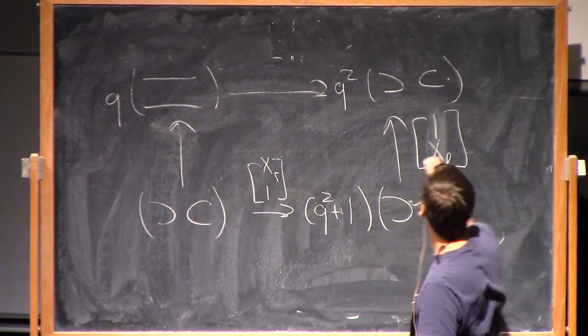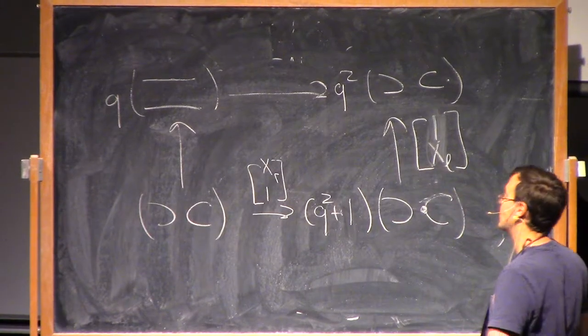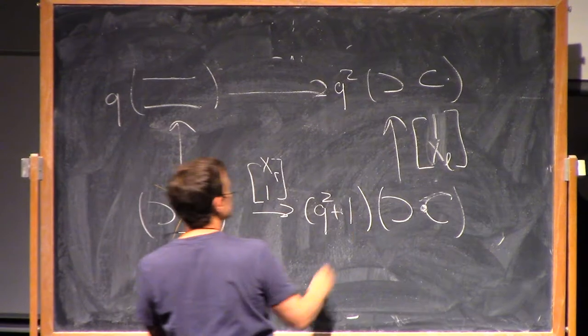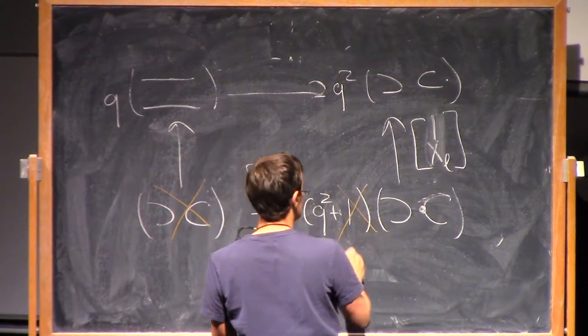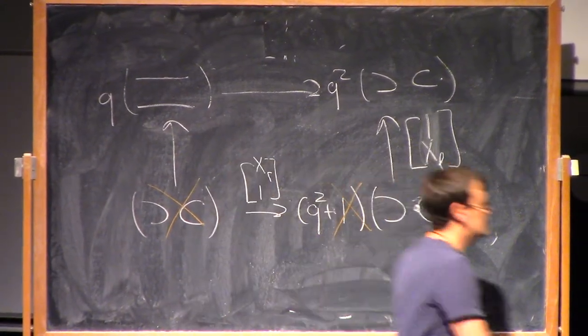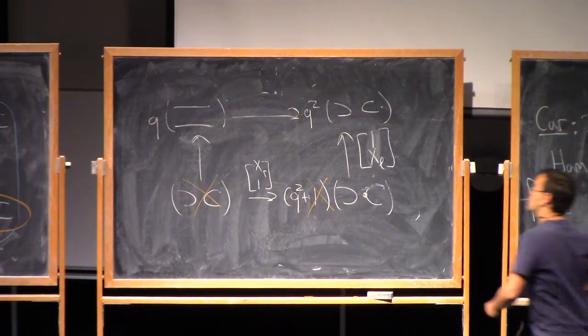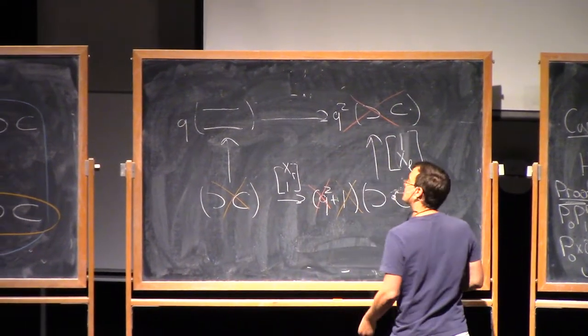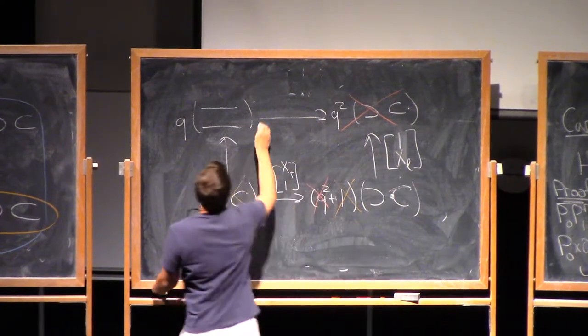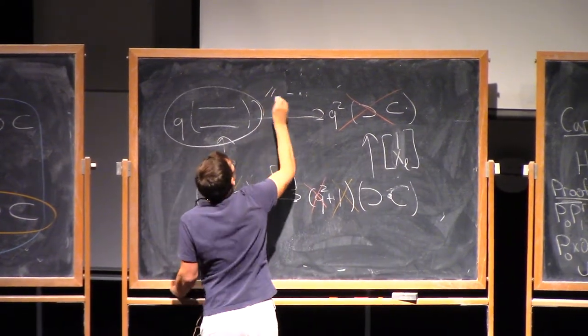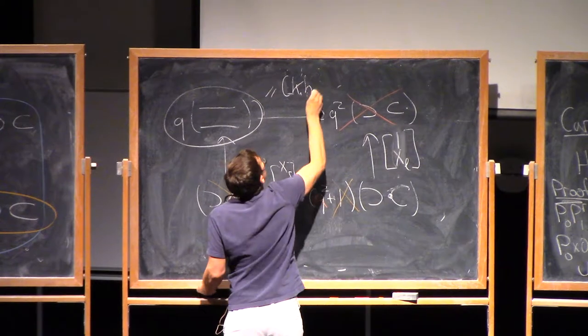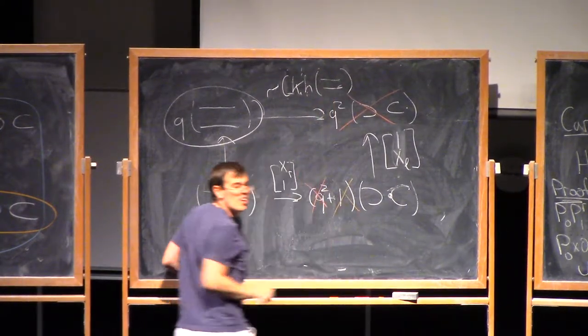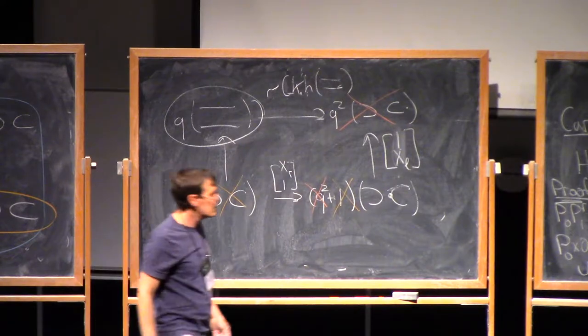And again we see that we have these entries that are isomorphisms. So I can cancel this with this, and this with this, and I'm just left with this, which is CKH up to a shift of the other Reitemeister diagram.